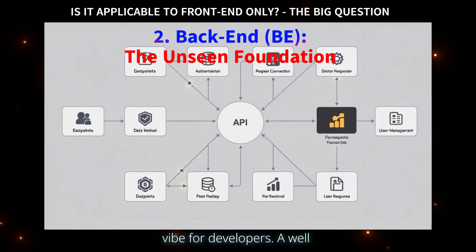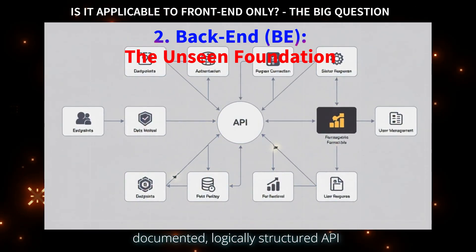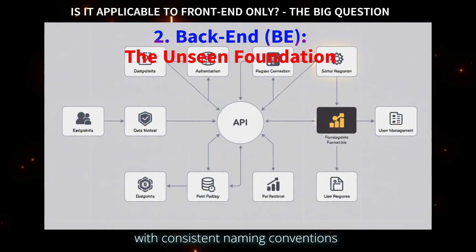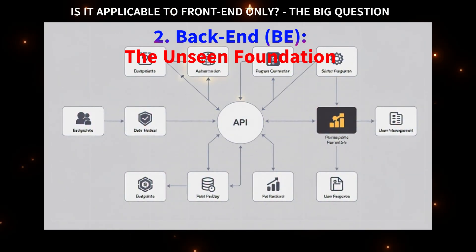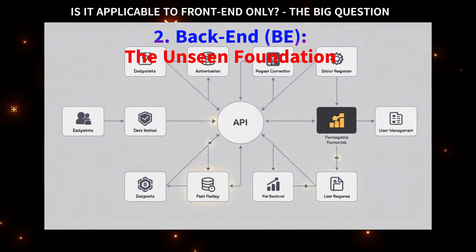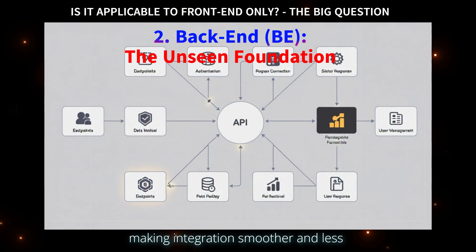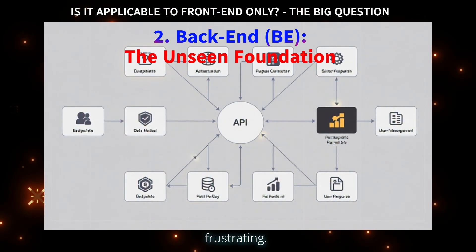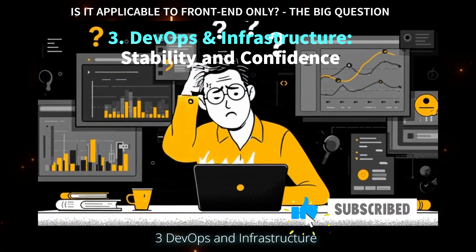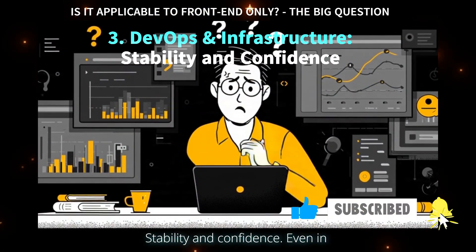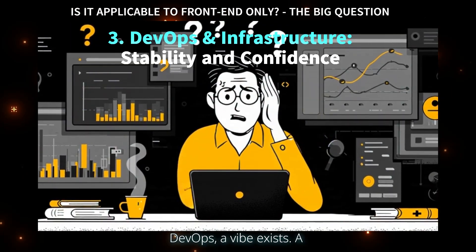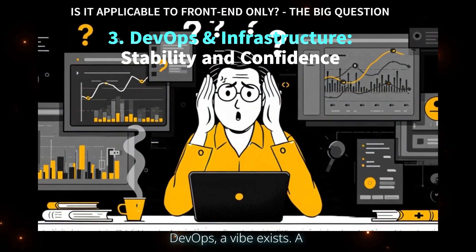For developers, a well-documented, logically structured API with consistent naming conventions creates a much better vibe to work with, making integration smoother and less frustrating. Even in DevOps, a vibe exists.